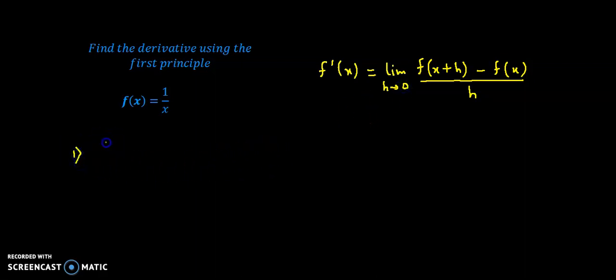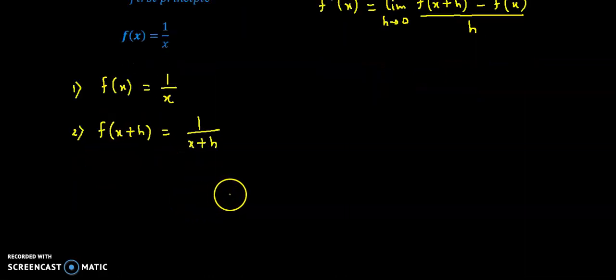The first step is f of x which is equal to 1 by x. Step number 2, obtain f of x plus h which is equal to 1 upon x plus h. Now we will substitute in both formula.